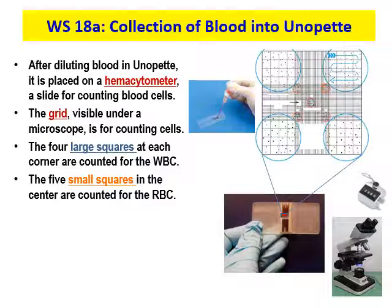After you dilute your blood in your UNAPET, you place it on the hemocytometer — a slide for counting blood cells. You'll see there's a grid on it, and the lab tech holding the frosted, odd-looking slide with blue gloves is holding the hemocytometer. That grid is what you see when you look under the microscope. You'd then use the small round silver counter to punch each time you see one of the cells you're counting.